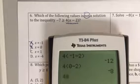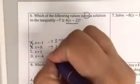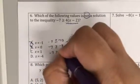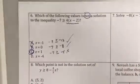Here I'm going to put in 4 times 1 minus 2. That is -4. Is -7 greater than or equal to -4? That's a false statement. So that's the answer we're looking for.